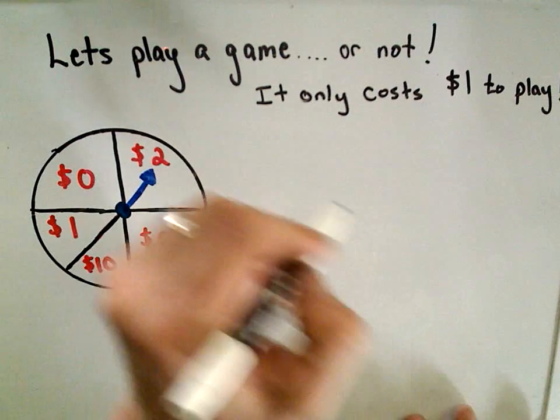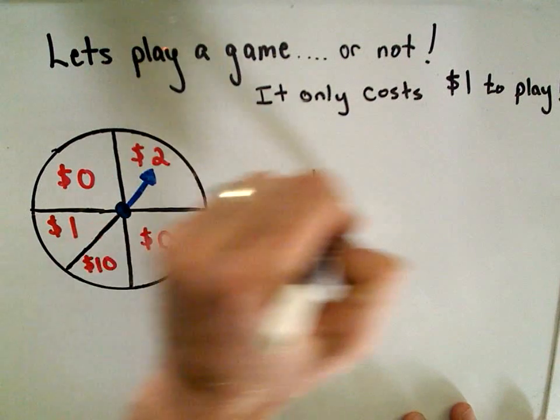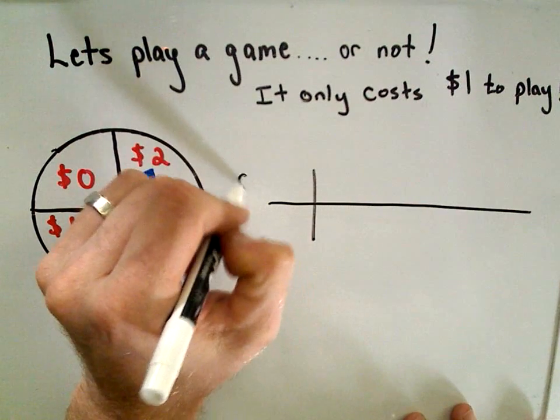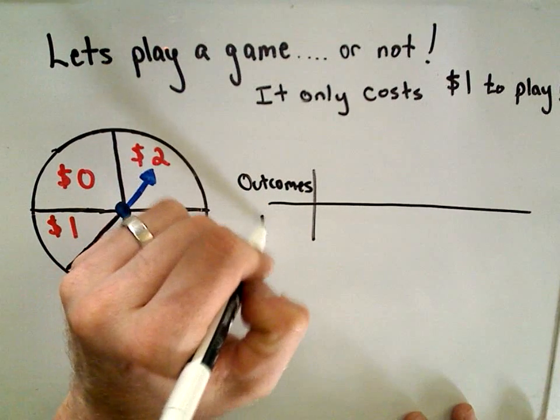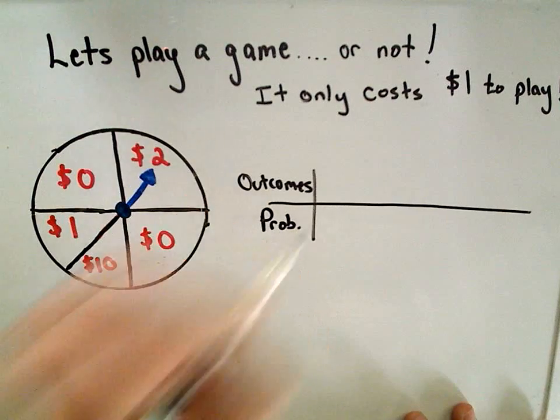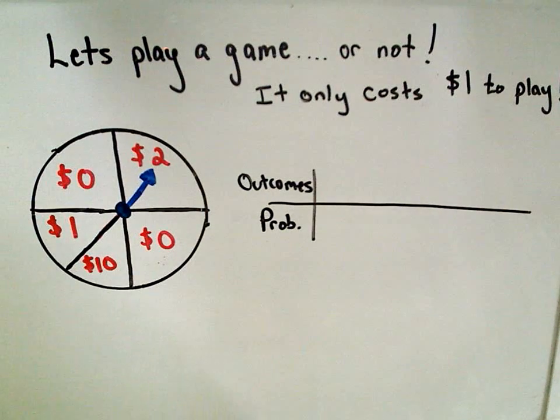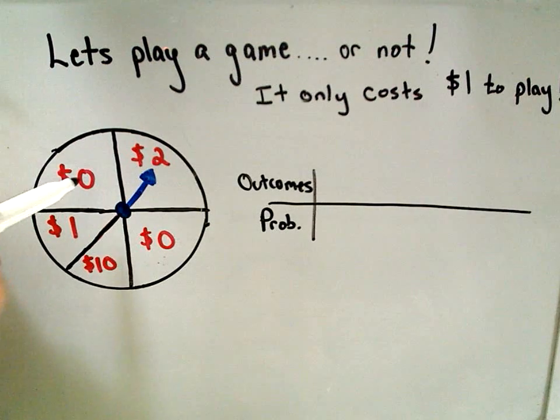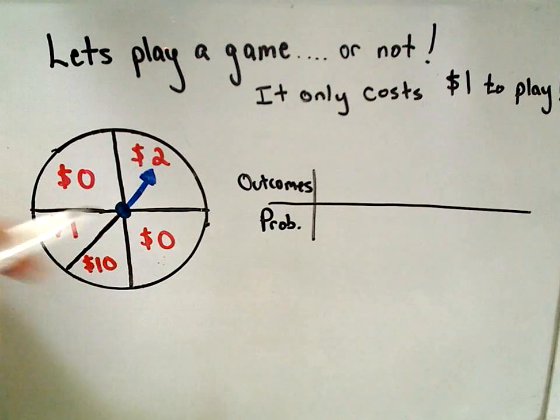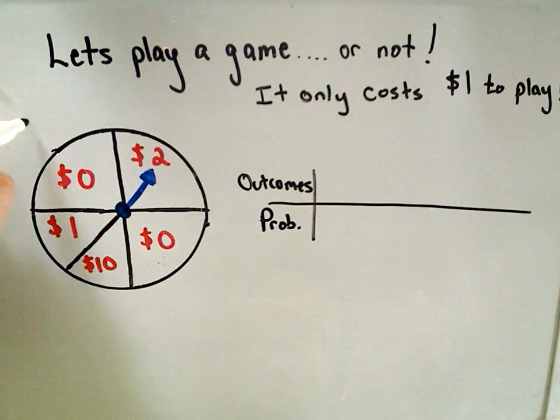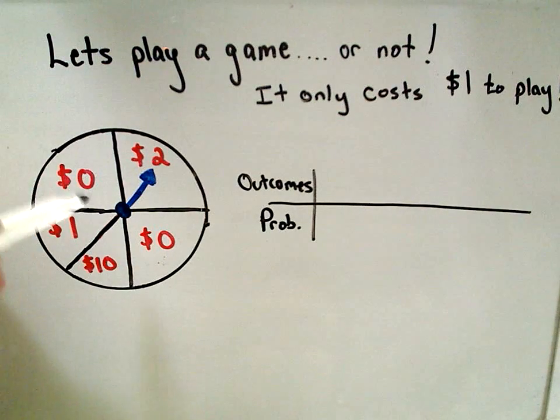Okay, so a couple things here. We need to list all of our outcomes and the probability associated with each of those outcomes. So let's see here. It looks like you can win $0 if it falls in the top left corner and also in the bottom right. To me, it looks like, just based on the area of the circle, the top left portion would be one-fourth of the circle.